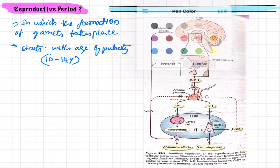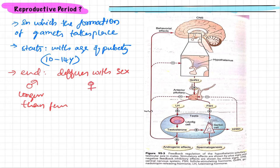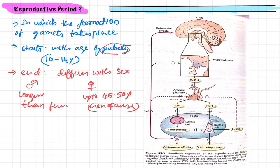The ending of the reproductive period differs with sex. In males it can last much longer, whereas in females it extends only up to 45 to 50 years, after which menopause occurs. So from puberty to menopause in females, and from puberty to beyond 50 years in males.